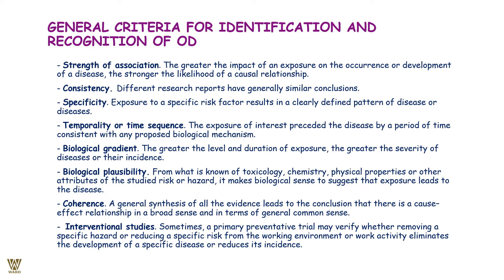Next is temporality or time sequence: the exposure of interest preceded the disease by a period of time consistent with any proposed biological mechanism. Then biological gradient: greater levels of exposure lead to greater severity of the disease or its incidence. Next is biological plausibility: based on toxicology, chemistry, physical properties, or other attributes of the hazard, it makes biological sense that the exposure leads to the disease. Finally, coherence: a general synthesis of all evidence leads to the conclusion that there is a cause-effect relationship in a broad sense.